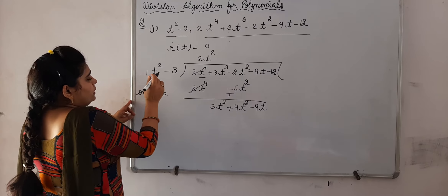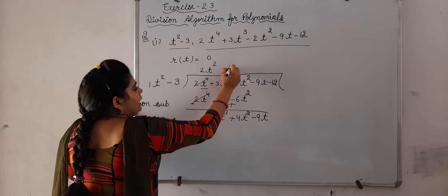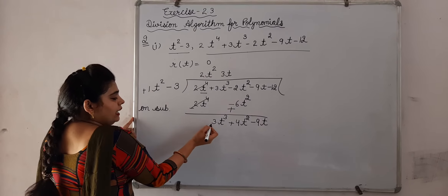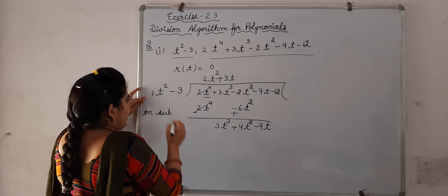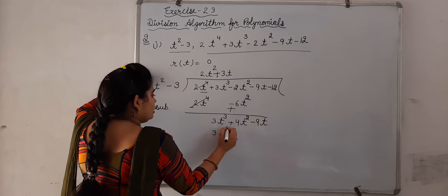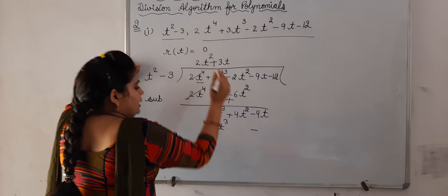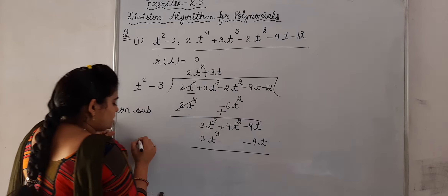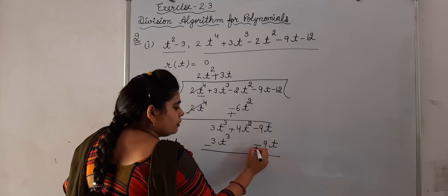Now compare t squared by t cubed — what will come here? t. The coefficient is 3, and it is of plus, so plus 3t. Multiply t squared by 3t to get 3t cubed, and minus 3 by 3t gives minus 9t. So we have 3t cubed minus 9t. On subtracting, minus plus minus: 3t cubed and minus 9t cancel.